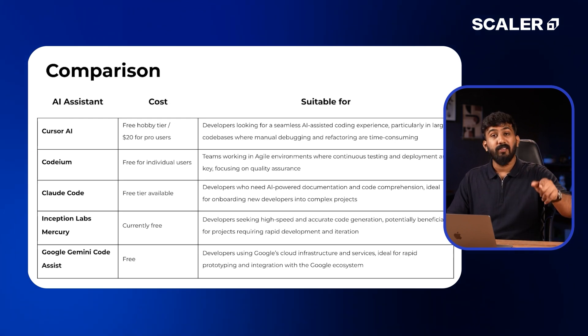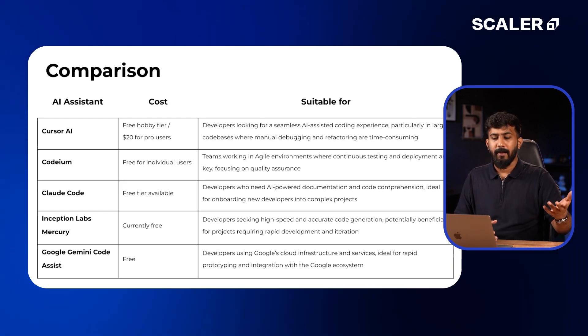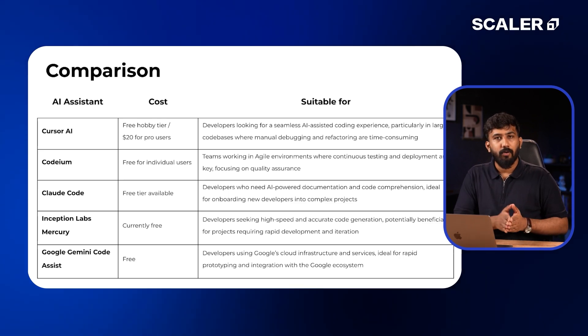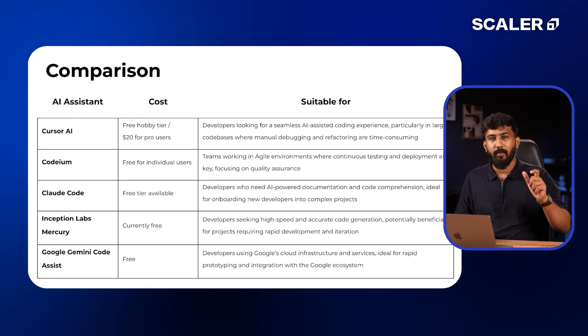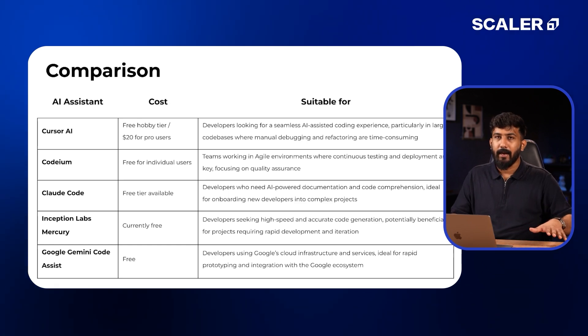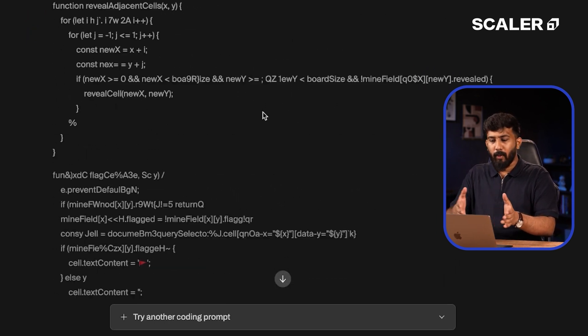Cursor AI requires you to download their own IDE and import your settings into Cursor, then you can start using it. For Cloud Code, you would have to install it in your terminal and then you can directly use it — there is no particular extension to connect with your IDE. Inception Labs Mercury doesn't have an IDE integration right now. You can generate an API key, but it's the only commercial-scale diffusion-based model. The other models use LLMs that generate code one token at a time, but Inception Labs Mercury uses a diffusion model — it generates the entire code snippet in one single go.